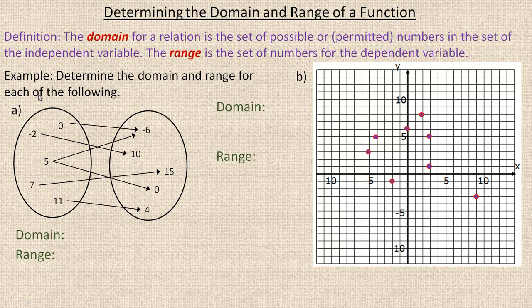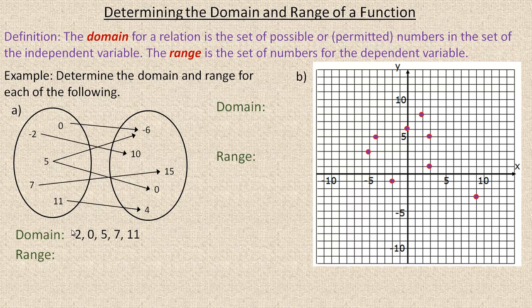I'm going to look at several different kinds of examples. The first one is called a mapping diagram, and it's just another way to list ordered pairs. For example, the ordered pair (0, -6) is a point in this relation, as well as (-2, 10), (5, -6), etc. The domain is the set of independent variables: -2, 0, 5, 7, 11. The dependent variable — what they're mapped to — would be -6, 10, 15, 0, and 4.